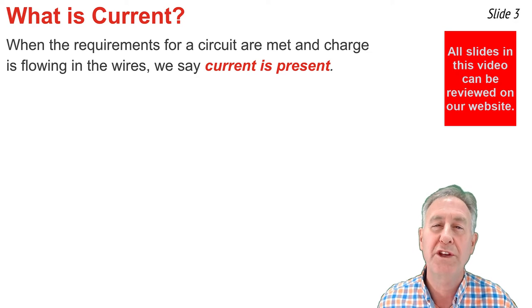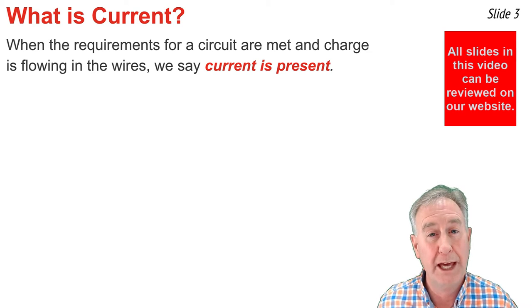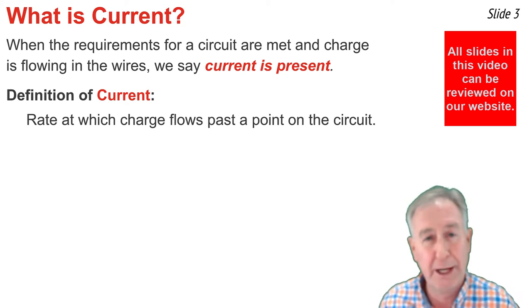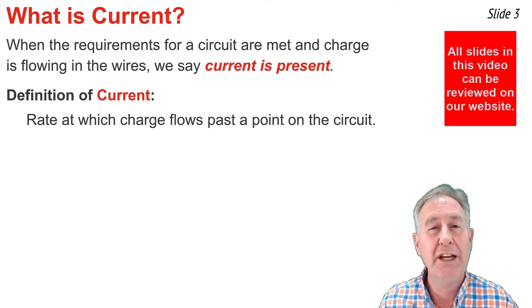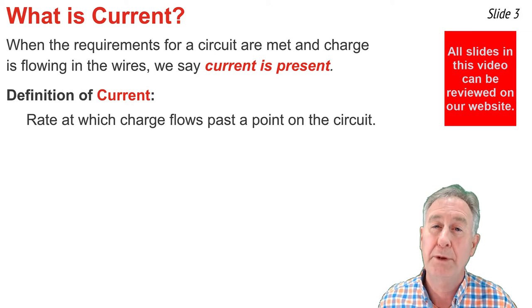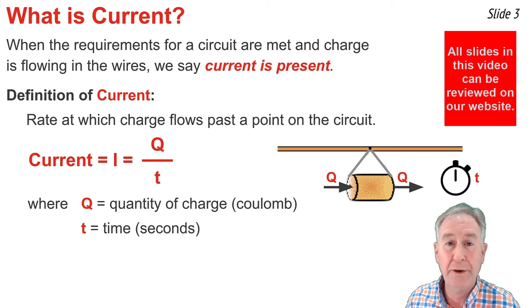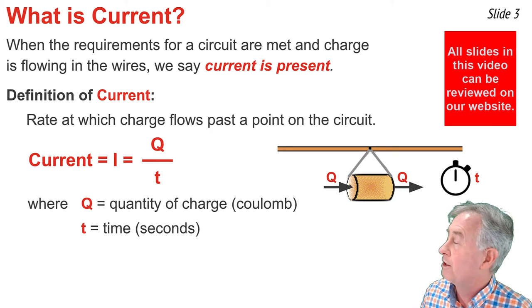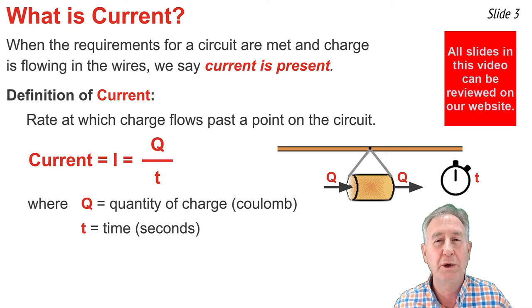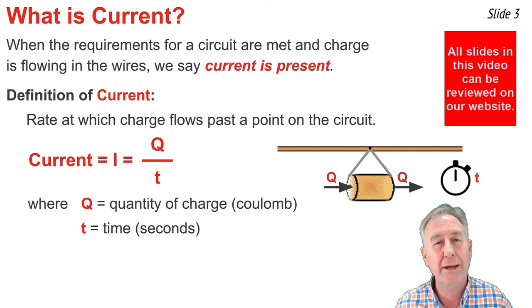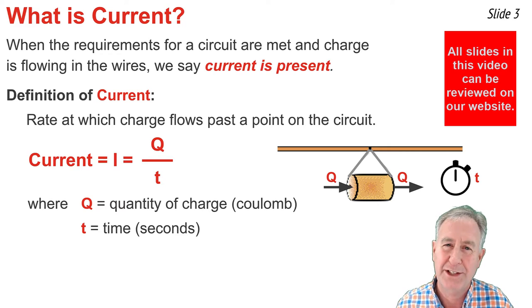Current is more than just a conceptual notion. It's a mathematical quantity that's defined as the rate at which charge passes by a point on the circuit. Like any rate quantity, the formula for current will be expressed on a per-time basis. The formula here is current, represented by the symbol I, is equal to the ratio of Q per T. Q is the quantity of charge usually expressed in the unit coulomb, and T is the time in seconds.